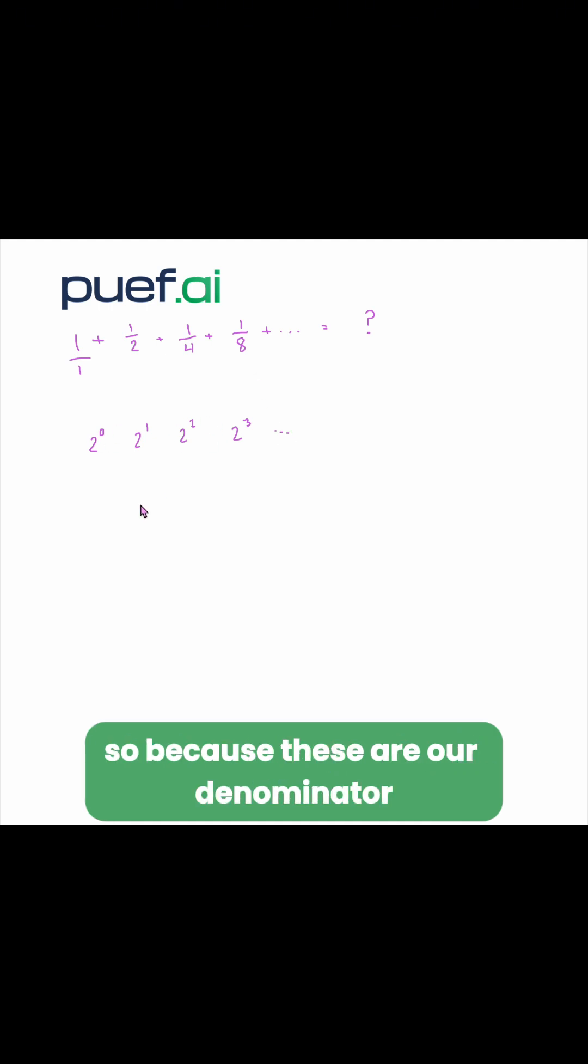So because these are our denominators, that means that our common ratio overall is going to be 1 half to whatever power, right? So that means that 1 half is our common ratio.